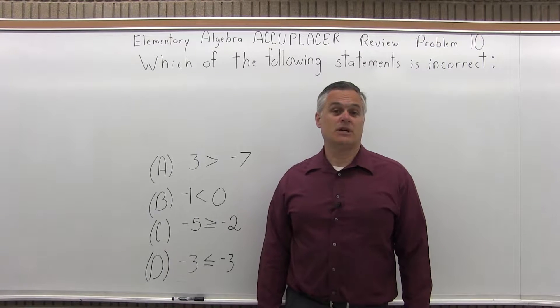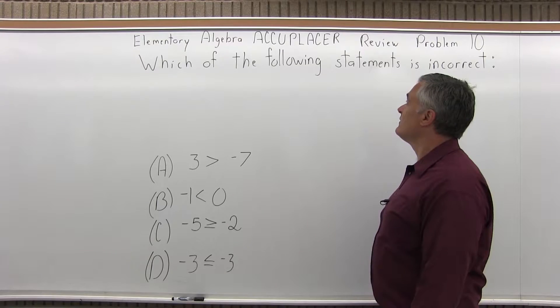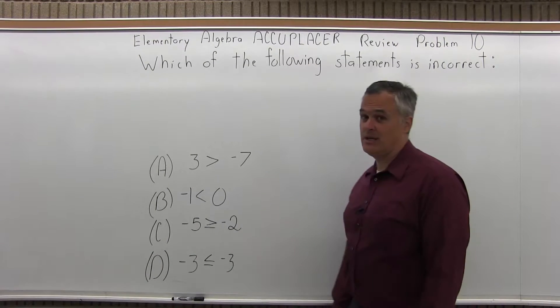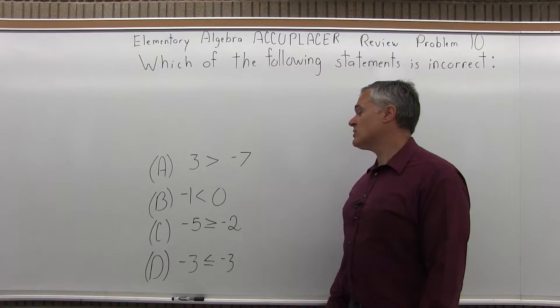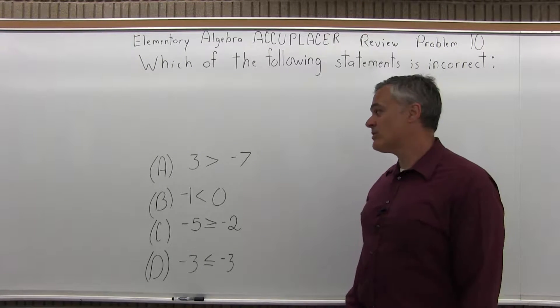This is the Elementary Algebra Accuplacer Review Problem 10. It asks which of the following statements is incorrect? And there are four choices. So what we're going to expect to see is that three of them are correct and there's one incorrect one.